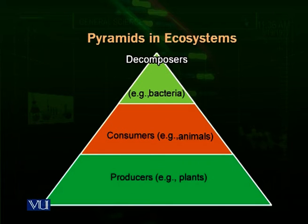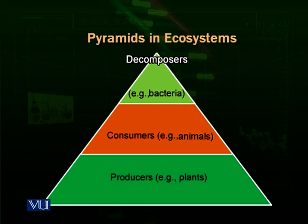We also briefly talk about pyramids in an ecosystem. When we look at trophic levels, we always make pyramids — conical diagrams which show the relationship between different feeding levels. Producers always come at the base and are maximum in number; they produce energy and carbohydrates for all other life forms. Then come the consumers, fewer in number than producers. Then the decomposers, which decompose both the producers and the consumers — bacteria and fungi — which are more or less in number compared to producers and consumers.